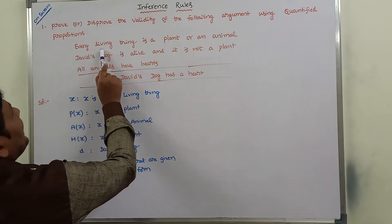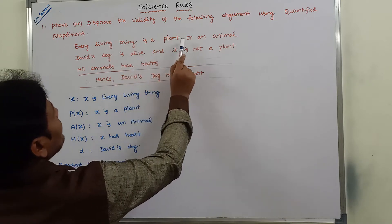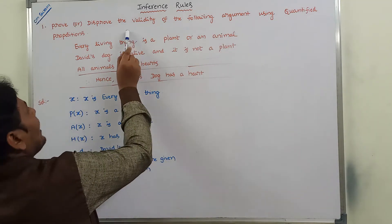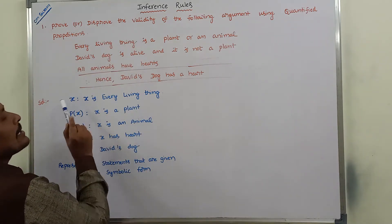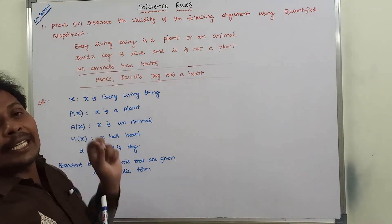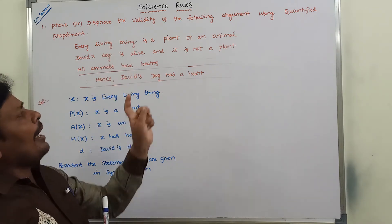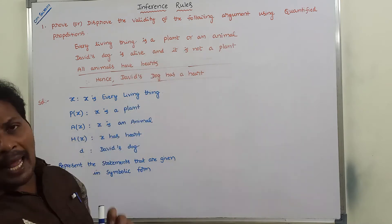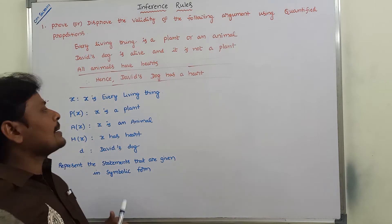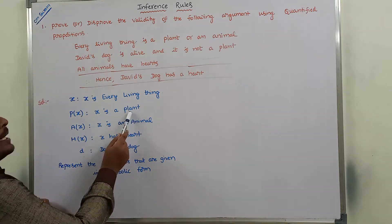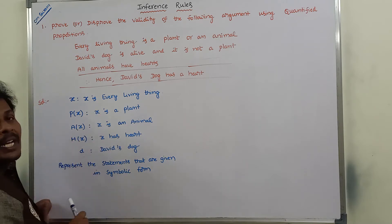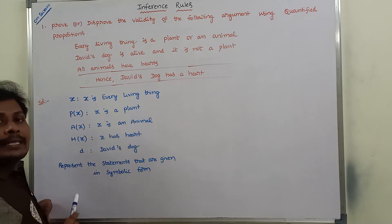The first proposition is: every living thing is a plant or an animal. Here, every living thing can be taken as X. X may be a plant or it may be an animal. If X is a plant, it can be written as P of X, where X is the subject and 'is a plant' is the predicate. We have to write the predicate first, then within the parenthesis we write the subject.